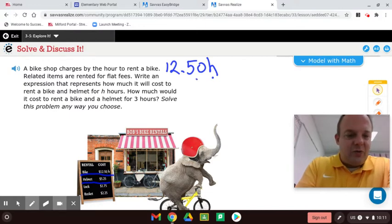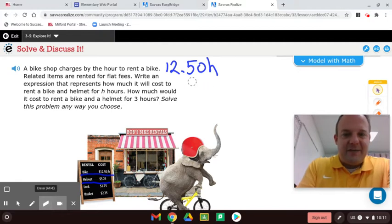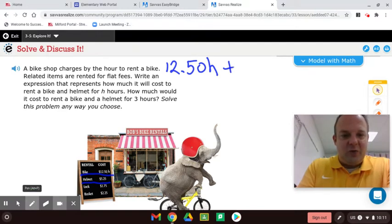So $12.50 times H is what that means there. $12.50 times H. Plus the flat fee. So the flat fee is what we'll call a constant. And that's the helmet is $5.25. Just a quantity there.